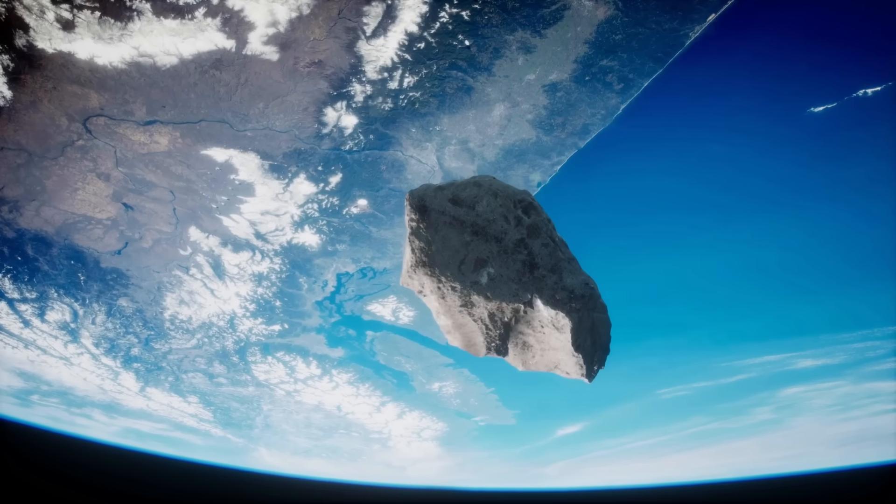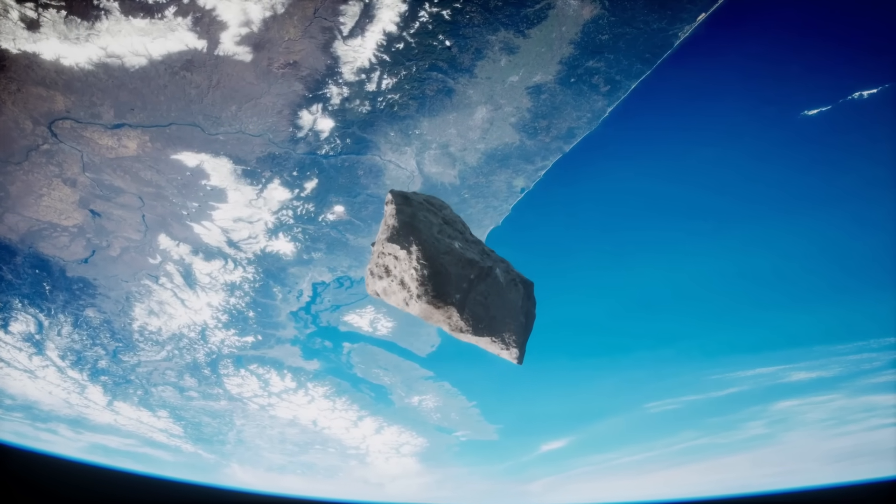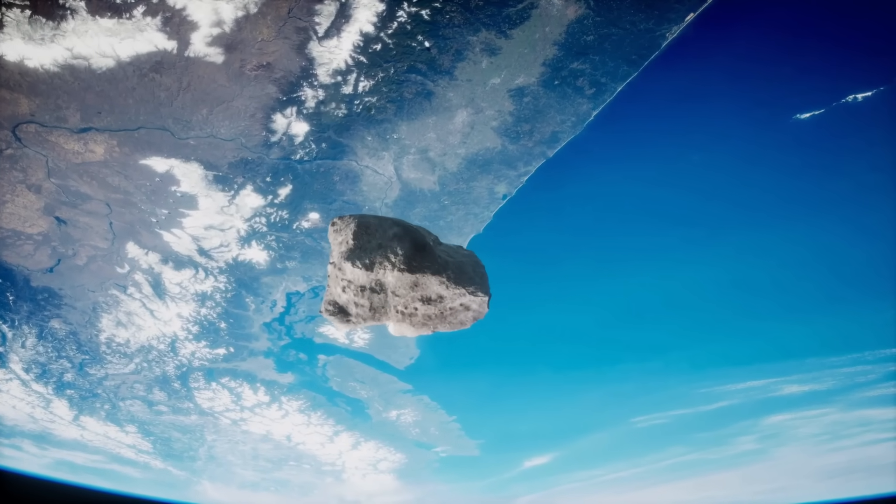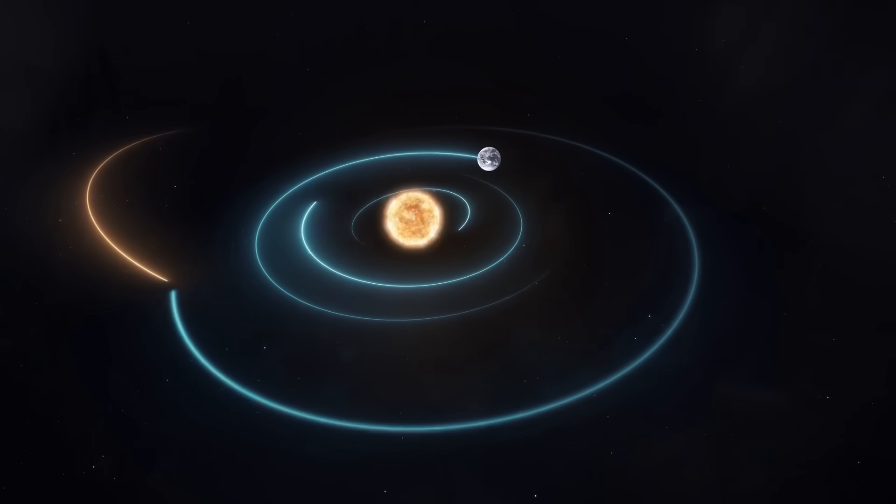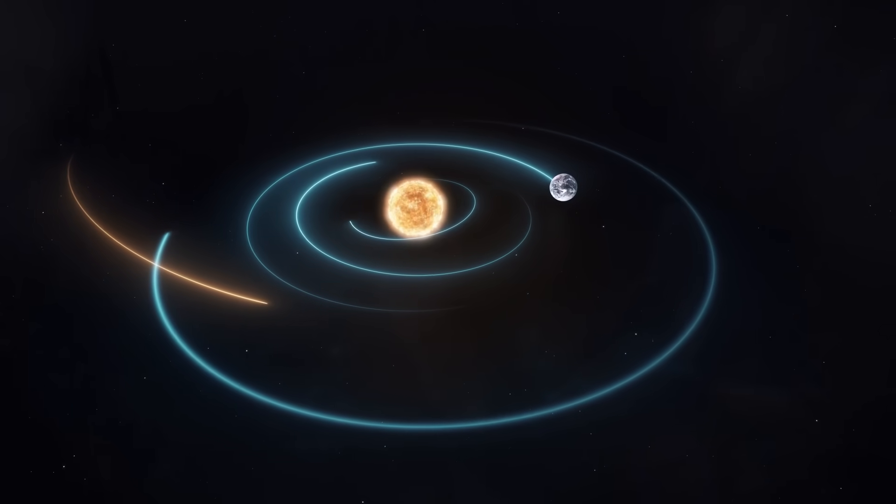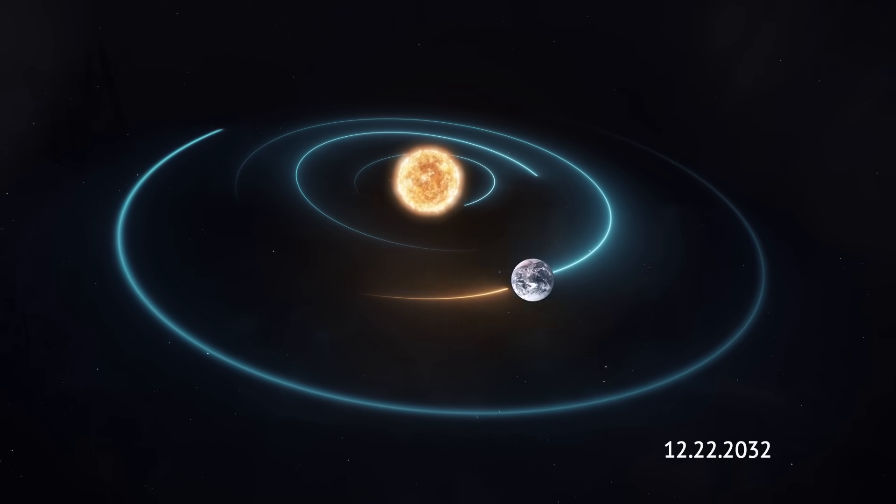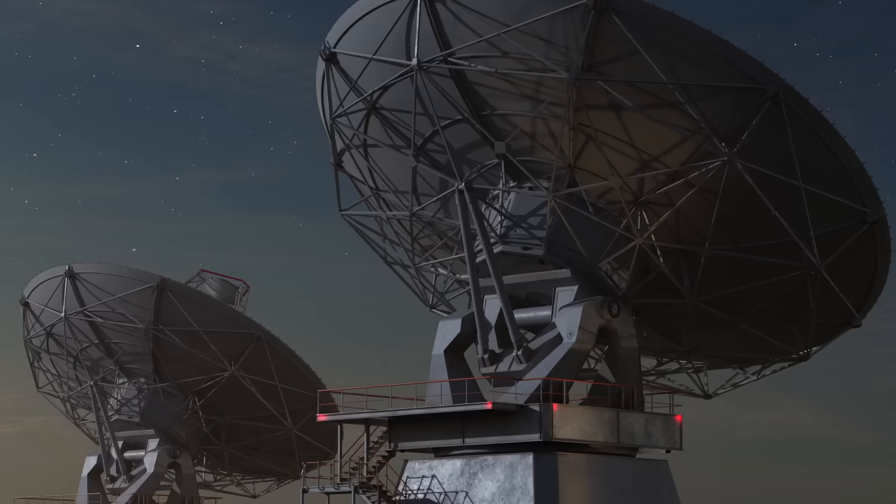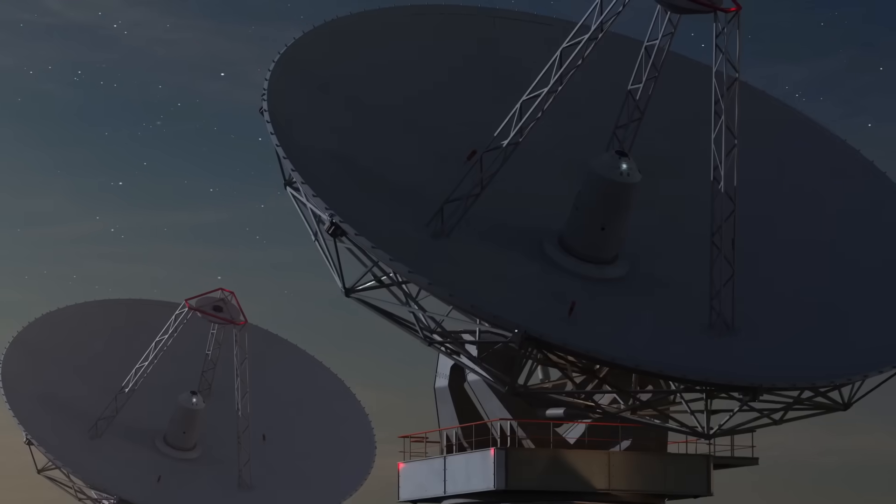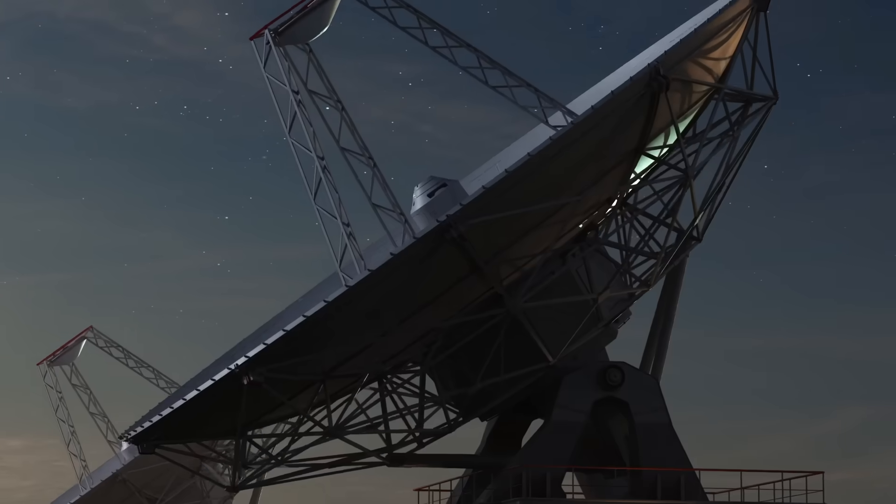With the current data astronomers have on the asteroid, they estimate not just one possibility for impact in 2032, but seven possibilities between 2032 and 2079, with the first possible impact date being December 22, 2032. Again, as more observations come in, this information is subject to change.